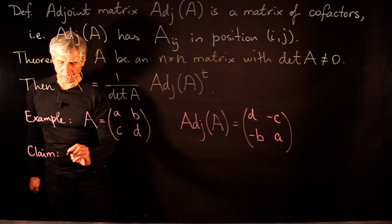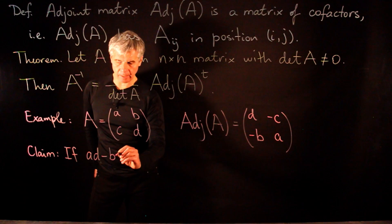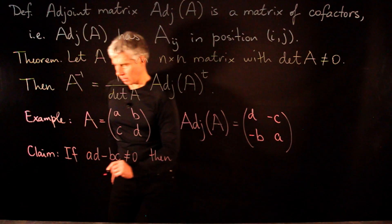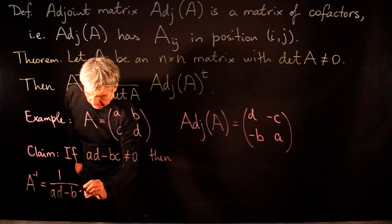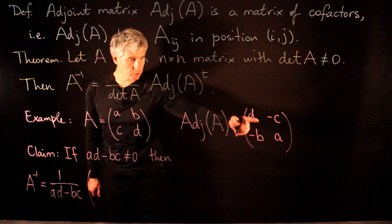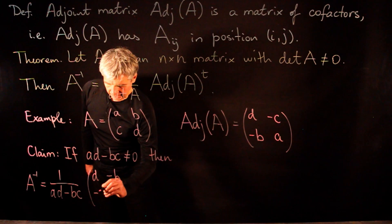The theorem states that if the determinant ad minus bc is not equal to 0, then the inverse of matrix A equals 1 over (ad minus bc) times the transpose of the adjoint matrix. Taking the transpose gives [d, -b; -c, a].